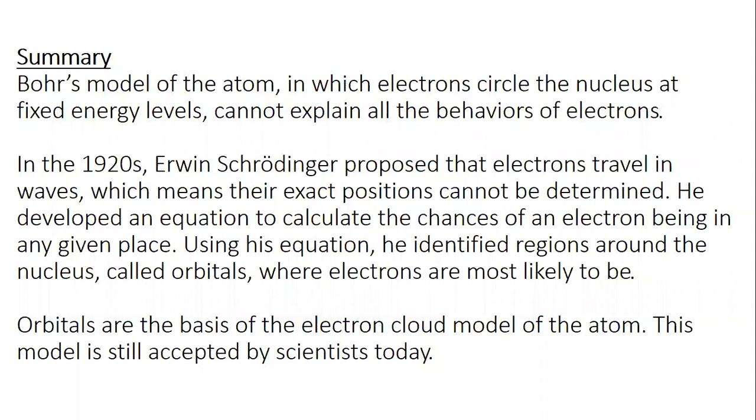So let's summarize. Bohr's model of the atom, in which electrons circle the nucleus at fixed energy levels, cannot explain all of the behaviors of electrons. In the 1920s, Erwin Schrodinger proposed that electrons travel in waves, which means their exact positions cannot be determined. He developed an equation to calculate the chances of an electron being in any given place. Using his equation, he identified regions around the nucleus called orbitals, where electrons are most likely to be. Orbitals are the basis of the electron cloud model of the atom. This model is still accepted by scientists today.